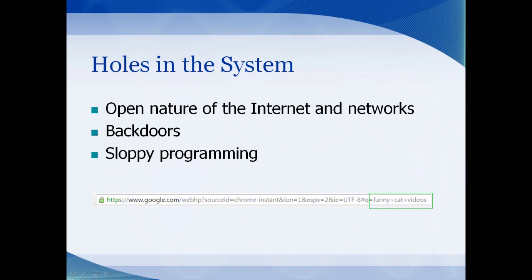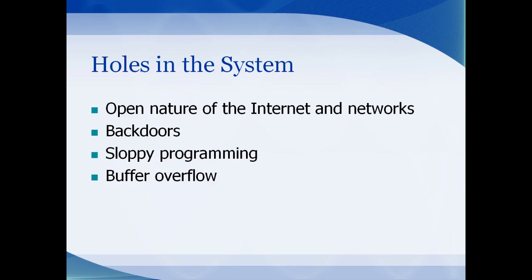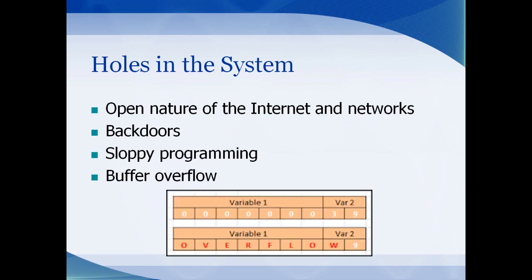Sloppy programming also leaves vulnerabilities where an intruder could cause what's called a buffer overflow. This is when the intruder stores information into a variable that's too large for that variable to handle, and the extra data overwrites sensitive information. For example, suppose a username is stored in variable one and the max size is seven characters. If that input is left unchecked due to sloppy programming, the intruder could enter a username longer than seven characters, overwriting the information in variable two.